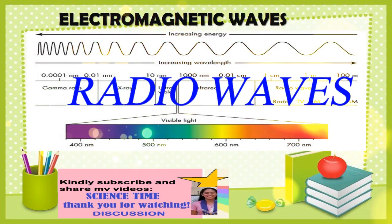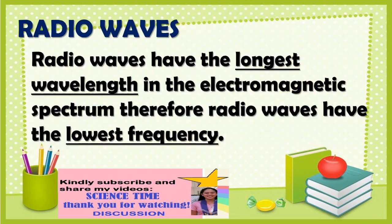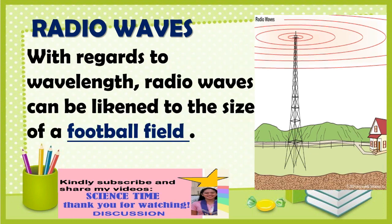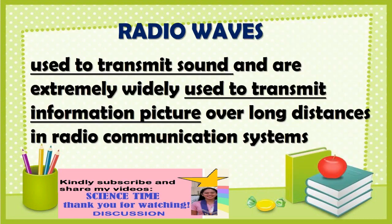Radio waves have the longest wavelength in the electromagnetic spectrum, and therefore have the lowest frequency. They are produced by making electrons vibrate in an antenna. With regards to wavelength, radio waves can be likened to the size of a football field.